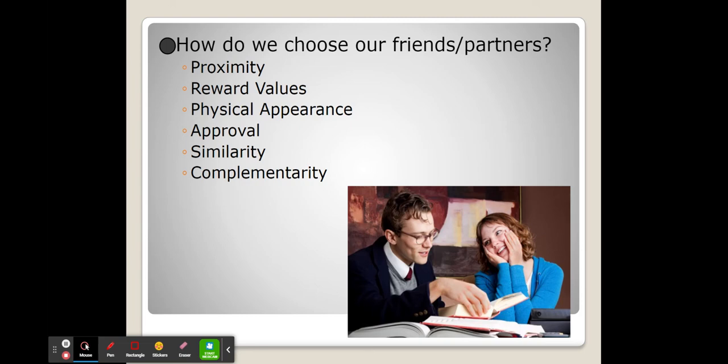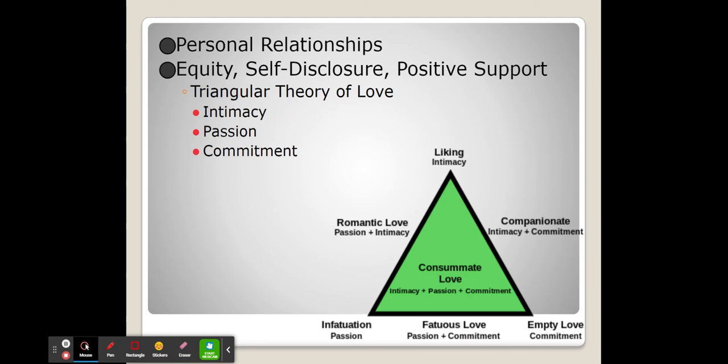And finally the last two kind of go together. Similarity is when we share similar values and complementarity is when we back up each other's weaknesses. Ultimately this leads us to personal relationships, and this is where a person will have a connection with another single individual. This can be a family member, a friend, or a romantic partner.